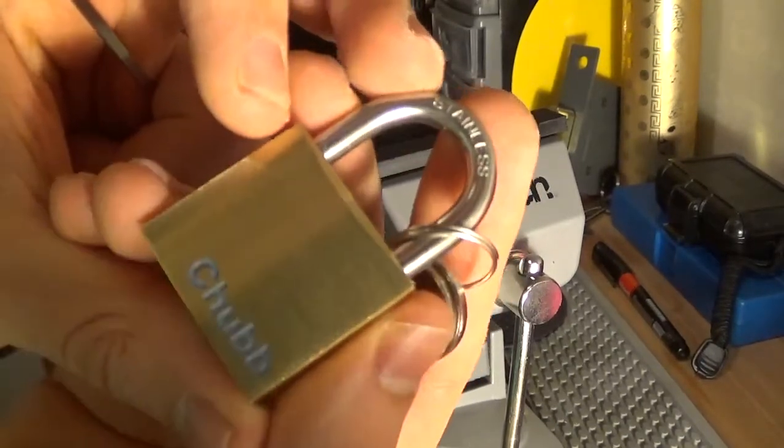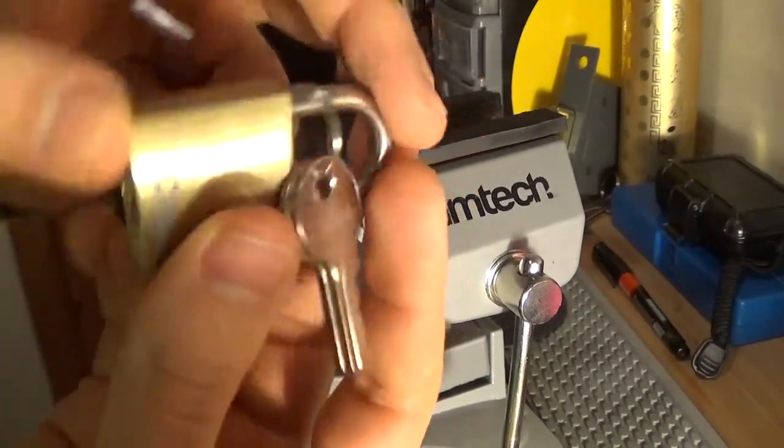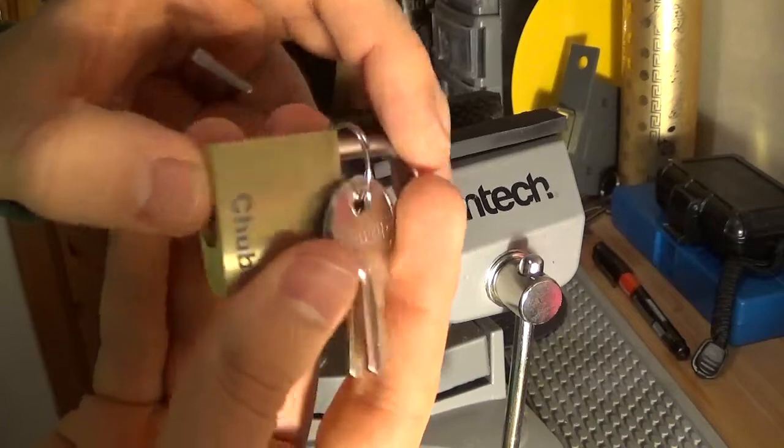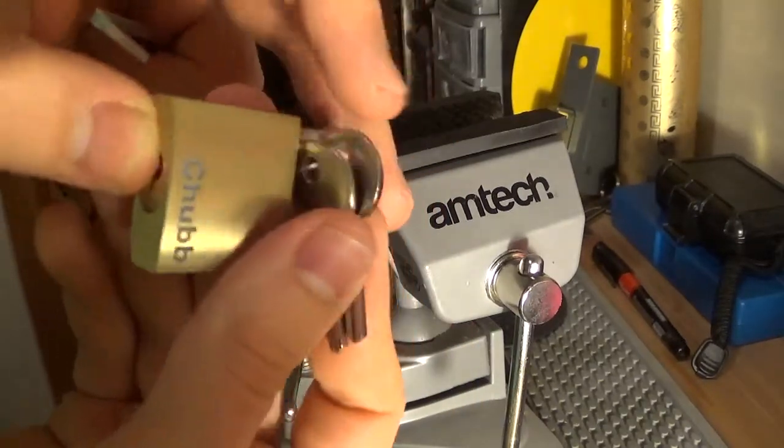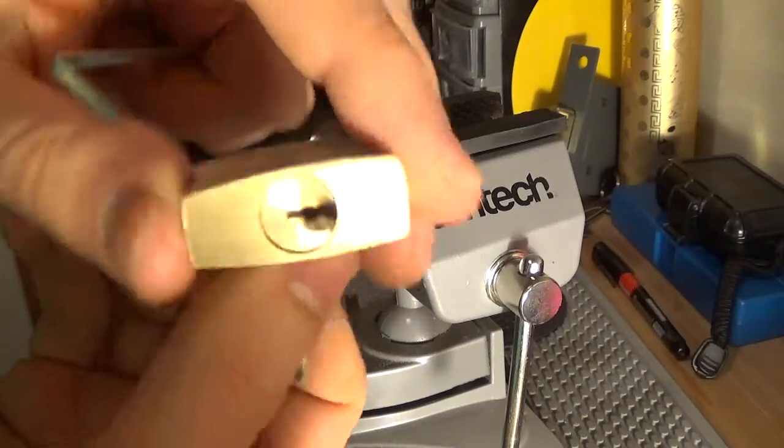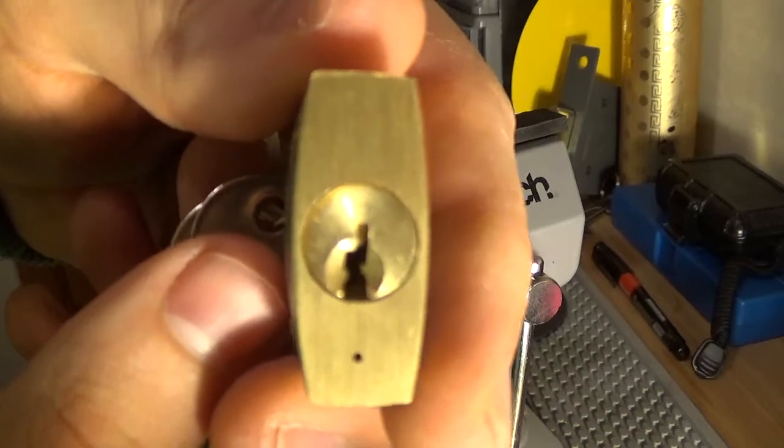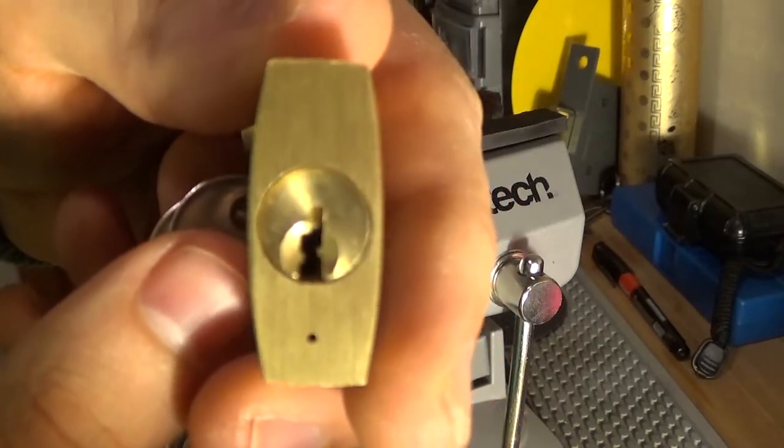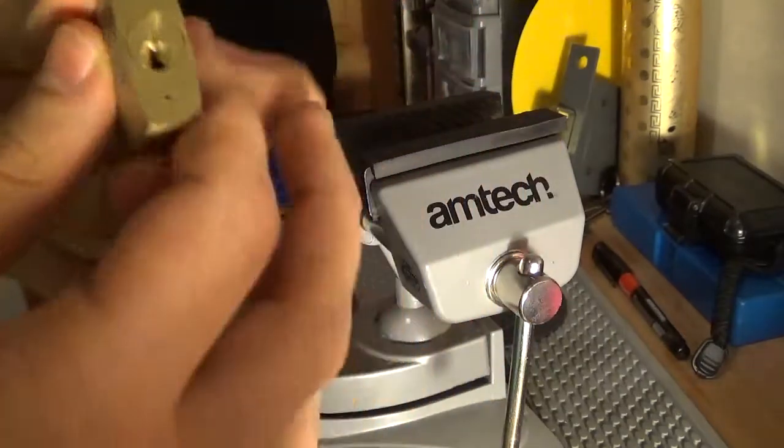Anyway, so here's the lock itself. It's got Chubb in blue, stainless shackle as I said. It's a four pin padlock. Here's its key, lots of highs up in there, and then it has a keyway like this, similar to I think American or Master Lock or something like that.